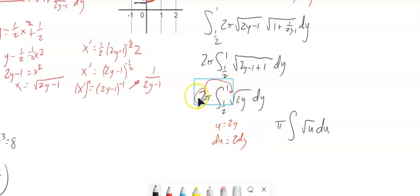Do a little u substitution. u equals 2y, du equals 2dy. I could pull that 2 back in so that just substitutes out. And I change these values. So 1/2 times 2, that's a 1. 1 times 2, that's a 2. So now I'm running from 1 to 2.